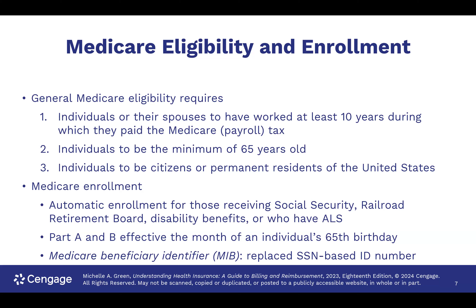People get automatically enrolled if they're already receiving Social Security, a railroad pension, disability benefits, or if they have ALS — otherwise known as Lou Gehrig's disease. Everyone else must enroll. Part A and Part B become effective the month of your 65th birthday. Whether you are working or not, you need to apply unless you're in one of these carve-out groups. If you don't, you may owe money back, because your health insurance will have been paying more of the burden when Medicare should have been primary. Bottom line: please enroll in Medicare when you turn 65.